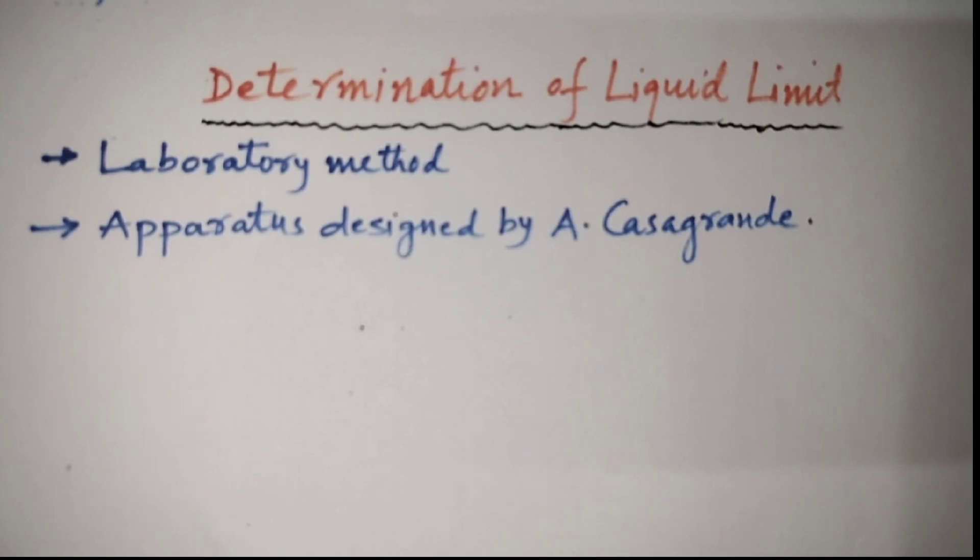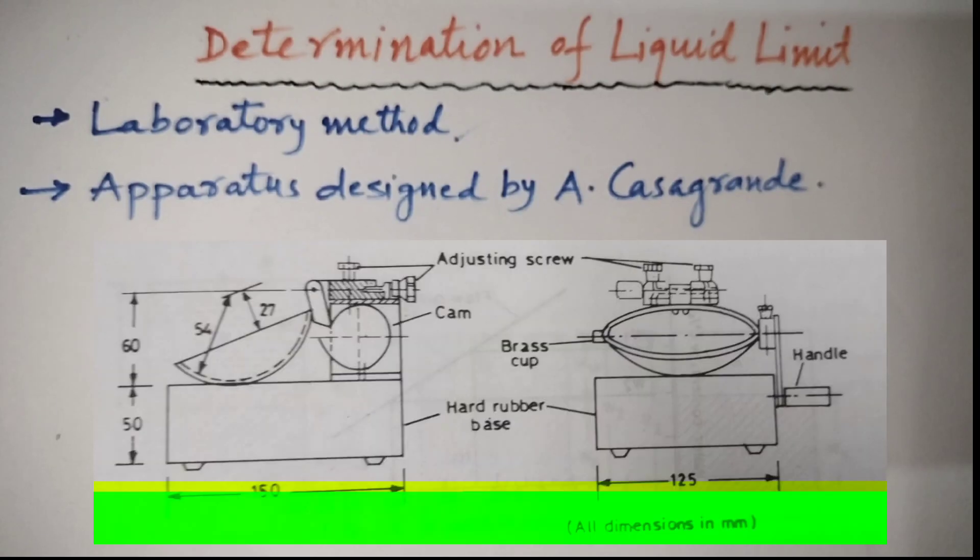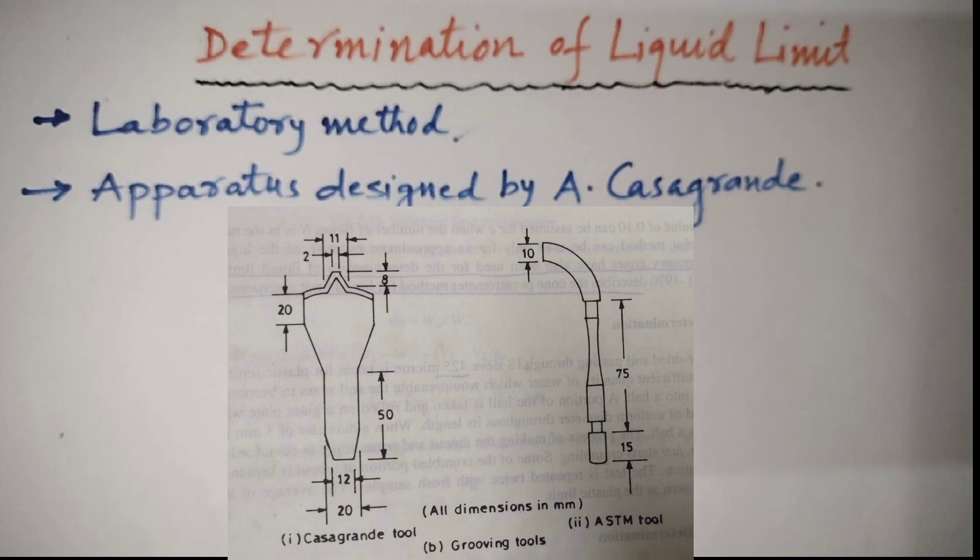Liquid limit of the soil can be determined in the laboratory. It is a laboratory method. By using an apparatus designed by A. Casagrande. As shown in the figure, the apparatus consists of a vulcanized rubber compound base with a brass cup suitably mounted. The brass cup can be raised and made to fall on the rubber base through a cam arrangement operated by a handle. The height of the fall of the brass cup can be adjusted with the help of an adjusting groove. Before the start of the test, the height of the fall of the cup is adjusted at 10 mm.